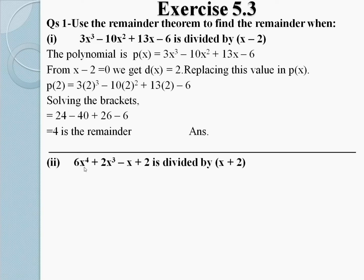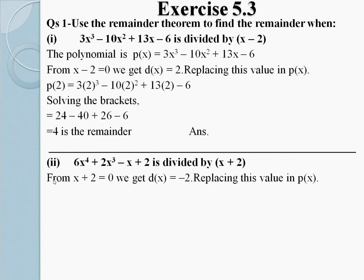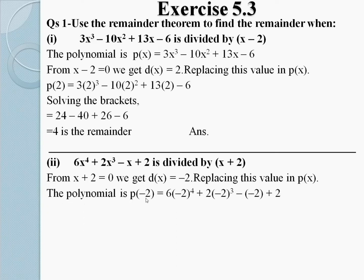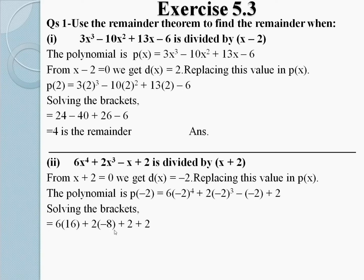Part 2: 6x⁴ + 2x³ - x + 2 is divided by x + 2. From x + 2 = 0, we get x = -2. Replacing this value in P(x): P(-2) = 6(-2)⁴ + 2(-2)³ - (-2) + 2. Solving the brackets: 6(16) + 2(-8) + 2 + 2. The remainder is 4, which is the required answer.